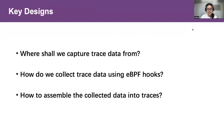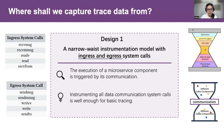I would like to introduce our key design insights by answering three questions. First, where shall we capture trace data from? We propose a narrow-waist instrumentation model with ingress and egress system calls. With a high degree of decoupling, the execution of microservice components is basically triggered by its communication. Instrumenting all data communication system calls at component boundaries is sufficient for basic tracing. We provide the comprehensive skeleton, and third-party user-defined instrumentations fill in the flesh and blood. This set of communication syscalls to the whole distributed system is analogous to the IP layer in the whole network stack.